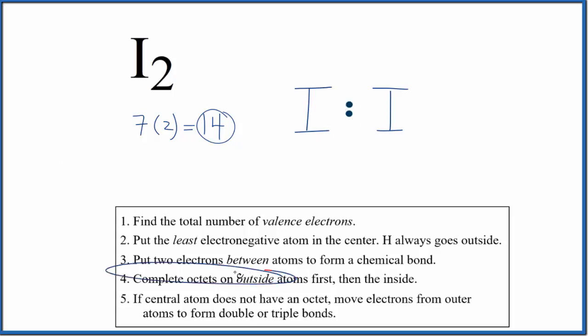Next we'll complete the octets on the outside atoms. In this case, the two iodine atoms. At this point, we've used 2, 4, 6, 8, 10, 12, 14 valence electrons.